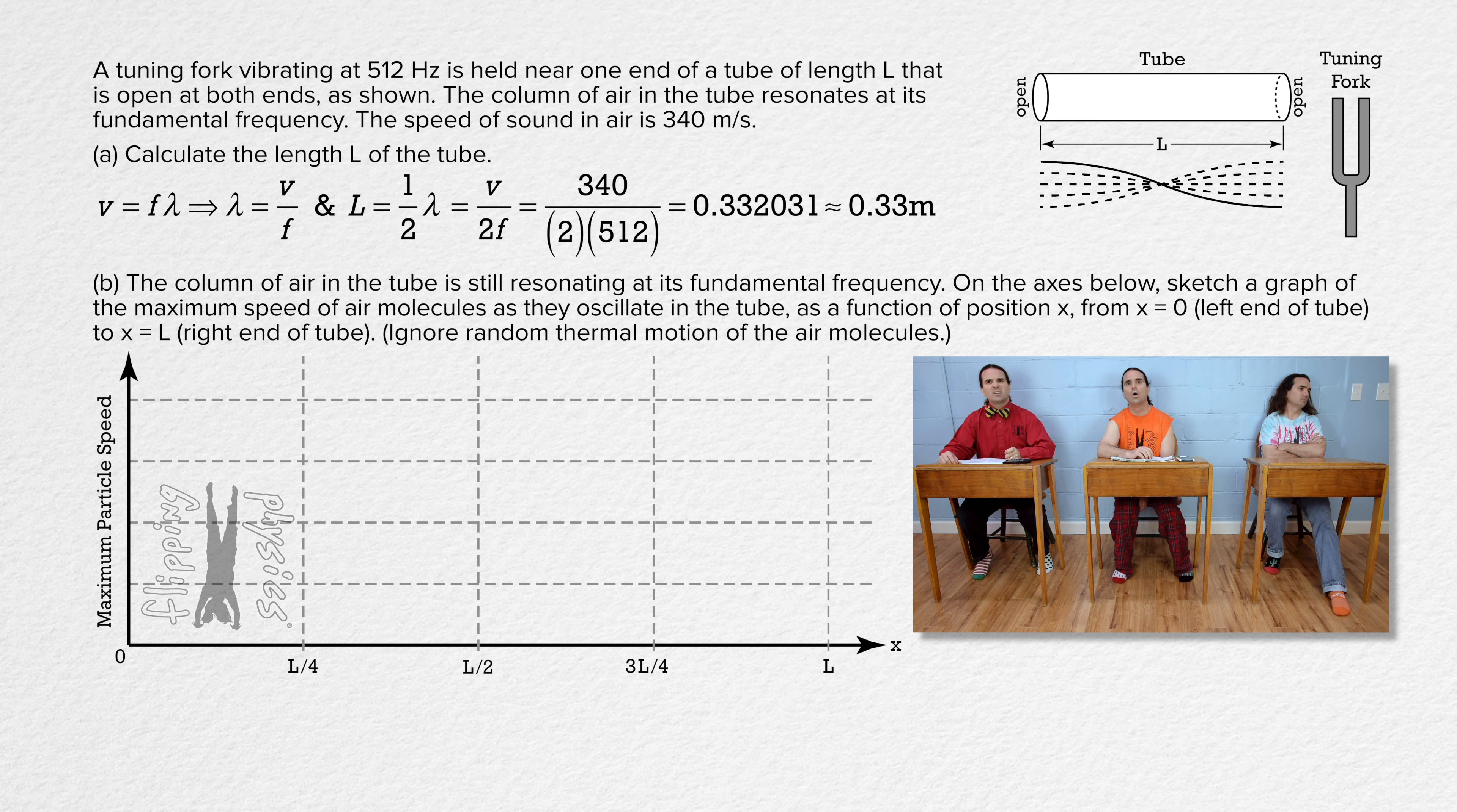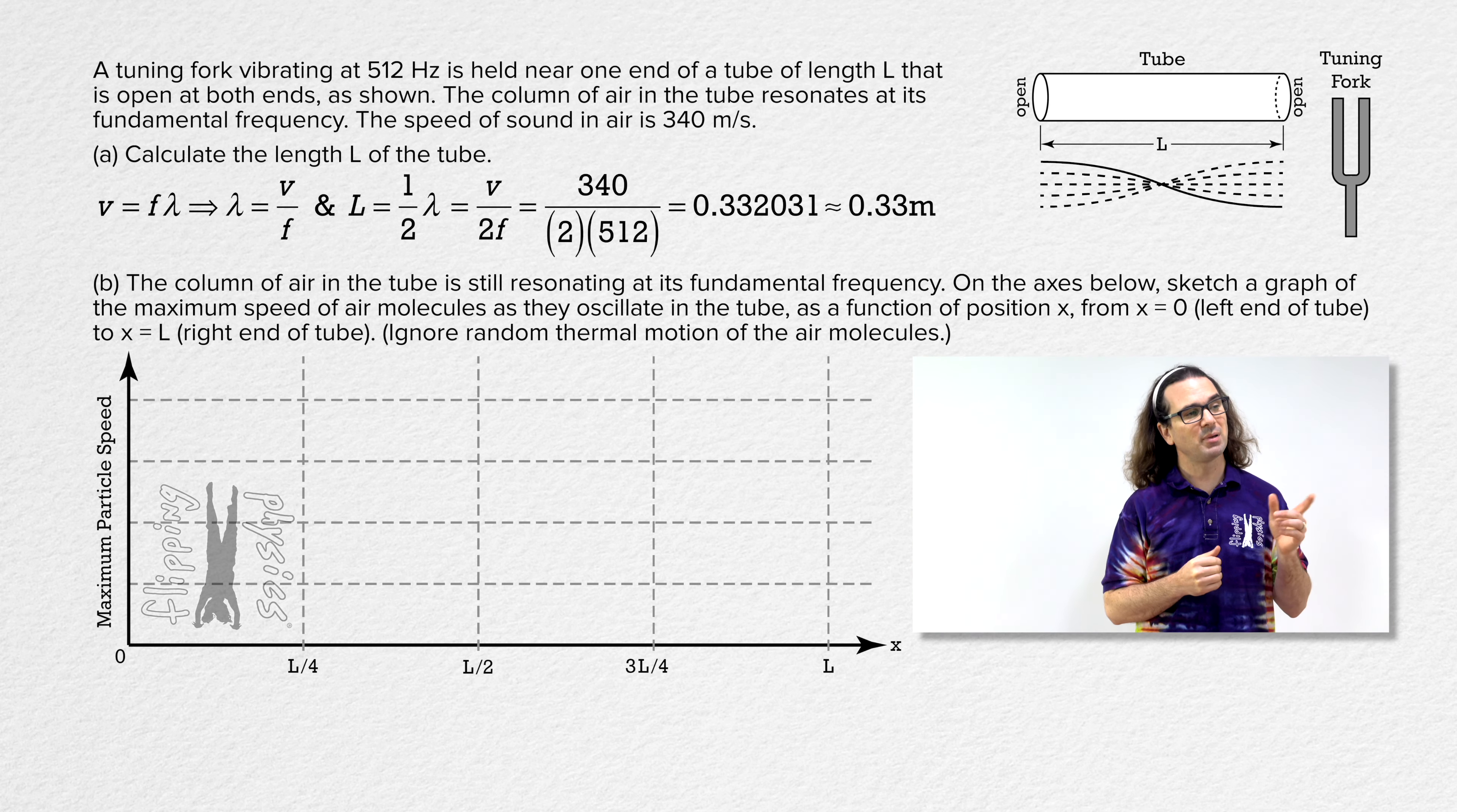What does ignore random thermal motion of the air molecules mean? I think it means we are ignoring the fact that air that is quote unquote stationary actually has air molecules in it that are moving around in all directions and the average speed of the air molecules equals zero, which is why we consider the air as a whole to not be moving. And it is that motion of the air molecules we are ignoring. Right, Mr. P? Correct, Bobby. Billy, please keep going.